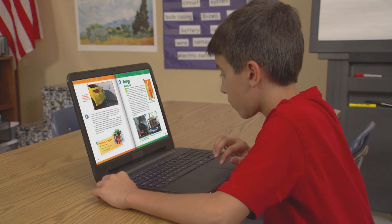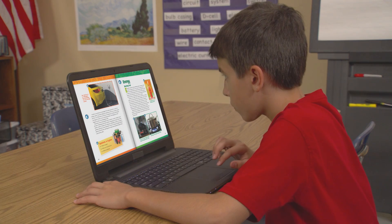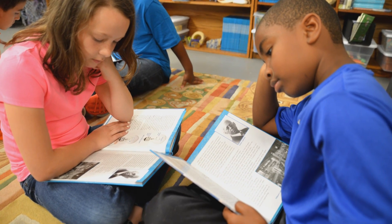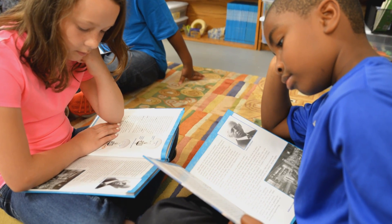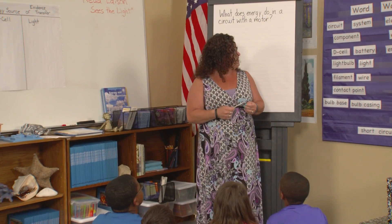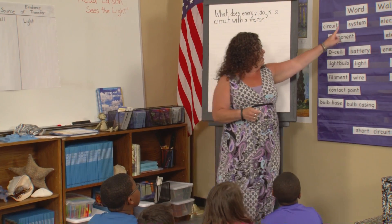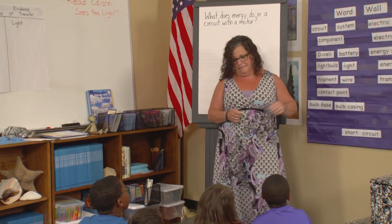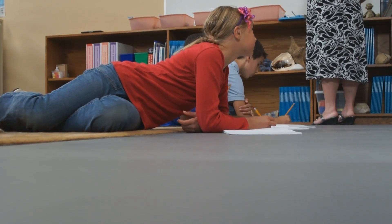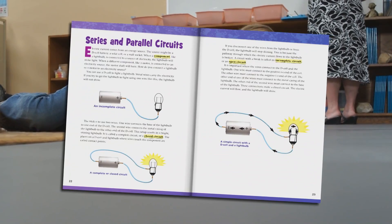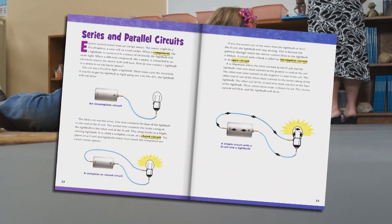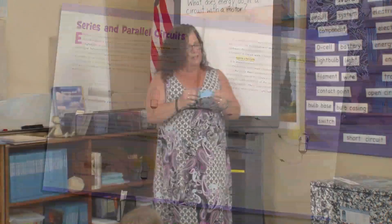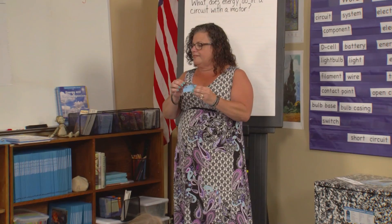Reading is an integral part of science learning. FOSS Science Resources books provide students with regular encounters with informational text and science vocabulary. The text and illustrations are tied to their previous experiences and knowledge gained from FOSS active investigations.